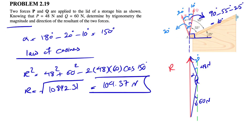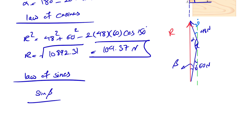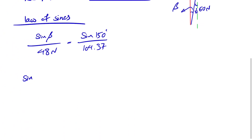Now let's figure out the direction R makes with our horizontal. We can call this angle beta and use the law of sines to find it. So sine of beta over the side in front of it — which is 48 newtons — equals sine of alpha over R. That is sine of 150 degrees over 104.37.